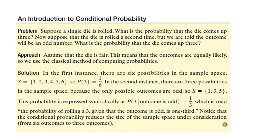Let's see how you did. In the first instance, the sample space is 1, 2, 3, 4, 5, 6 for the single die, and we assume everything is equally likely. So the probability of 3 is 1 over 6. But in the second instance, we are told that the outcome is odd, so the sample space really is 1, 3, and 5. All of these are equally likely. So the probability of 3 given the outcome is odd is 1/3. This is an example of the notation and the way we do such calculations.